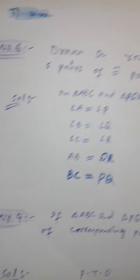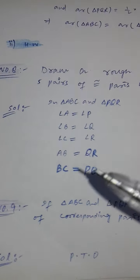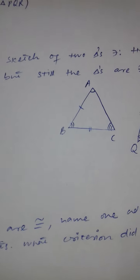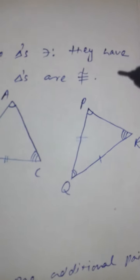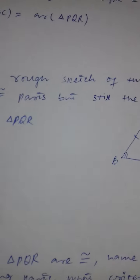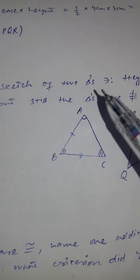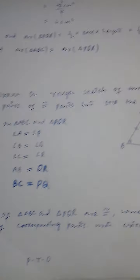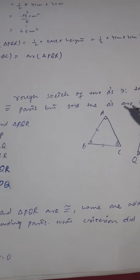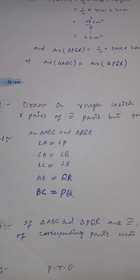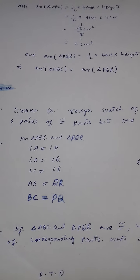Now moving to question number eight. It says: draw a rough sketch of two triangles such that they have five pairs of congruent parts, but still the triangles are not congruent. So you have to draw two triangles where five of their parts are equal, yet the triangles are still not congruent to each other.